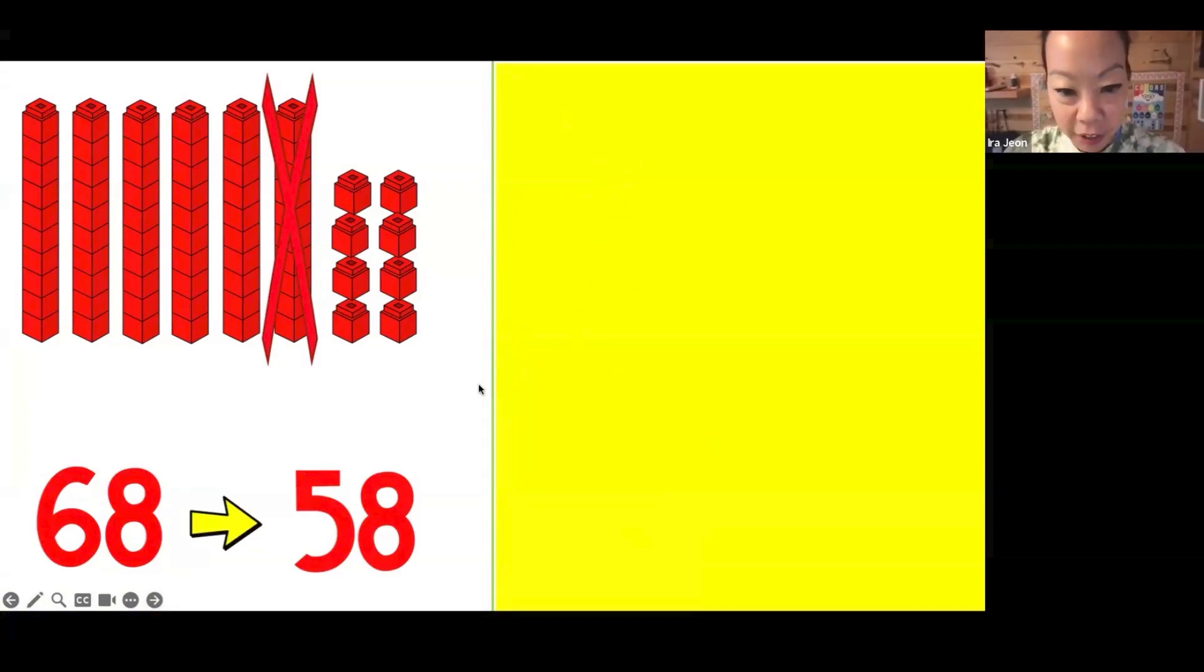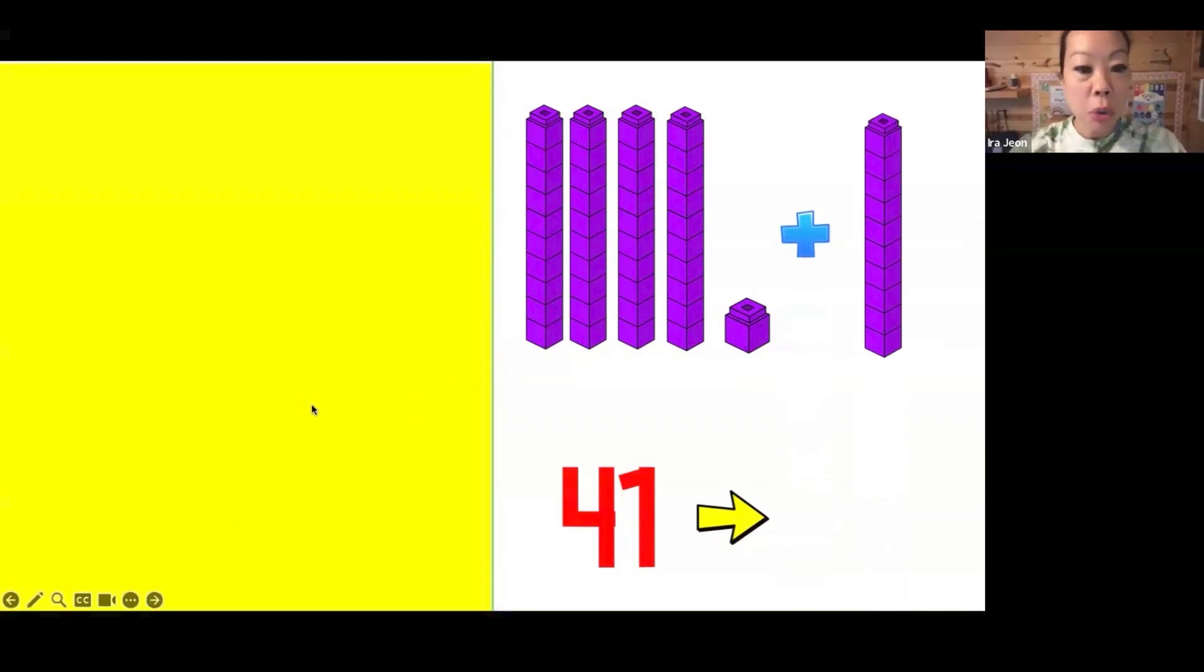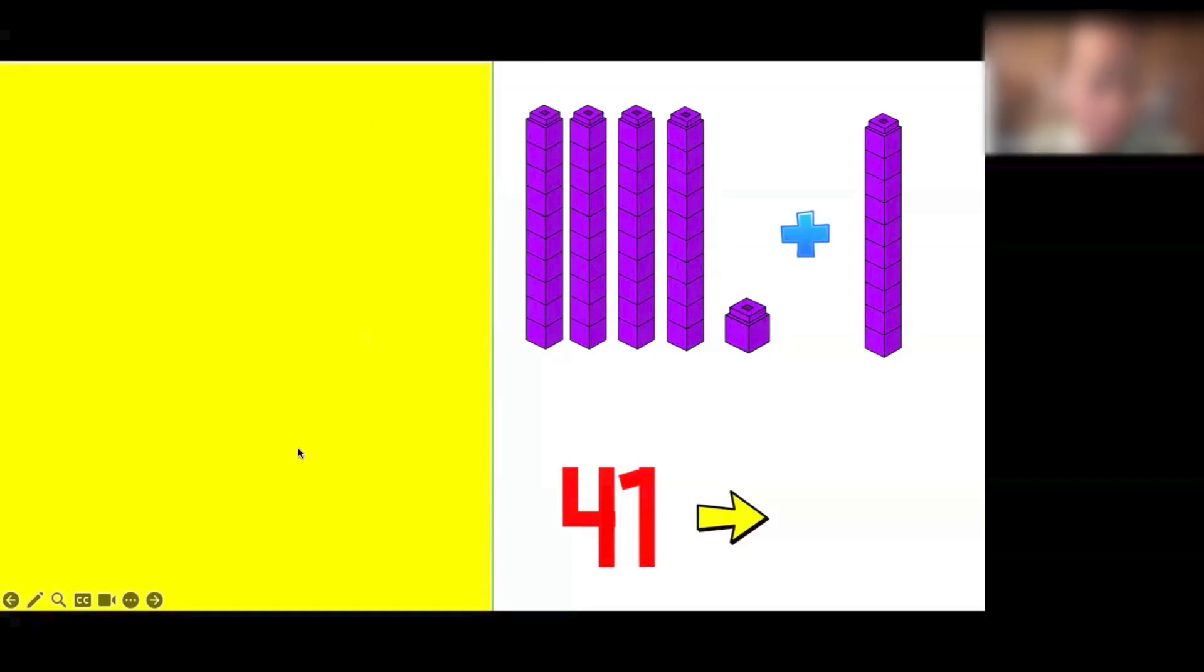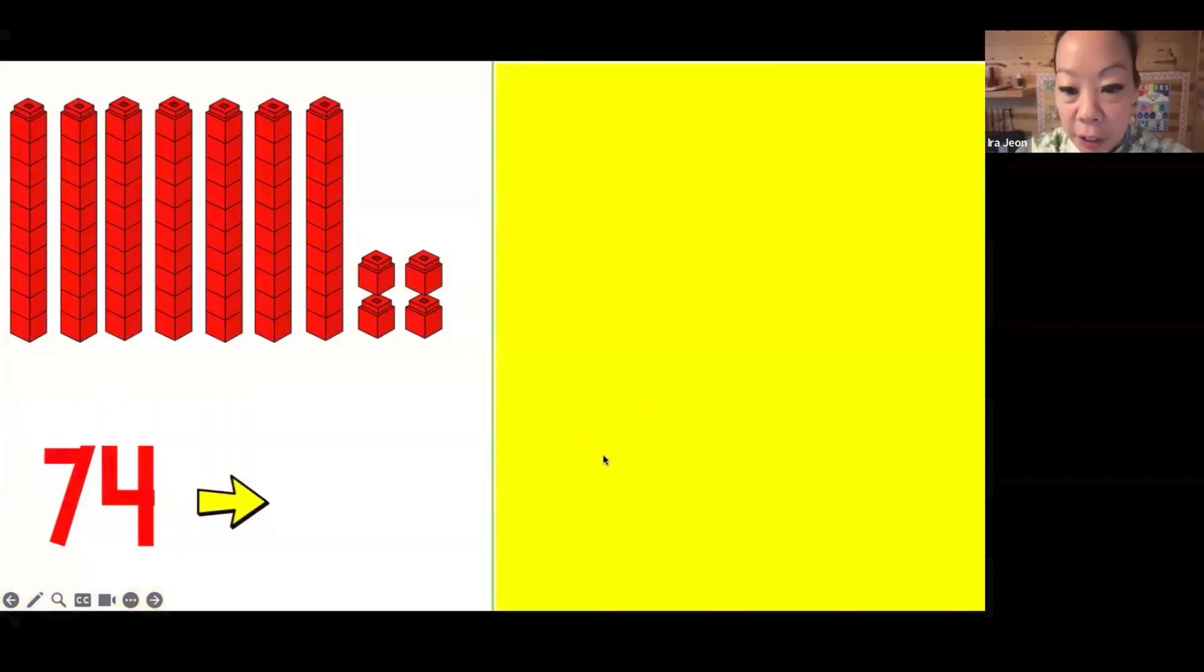Now I have 41 blocks and I am adding 10 more, so now what is my new amount? Let me wait for some of your answers before I choose somebody. Aiden, what is your amount? 51. Okay, did everybody get 51? If you did, you got it right. So that would be 10 more.